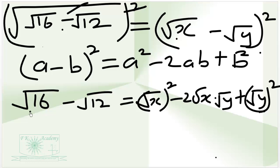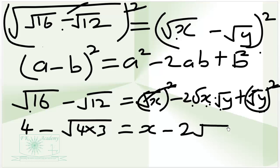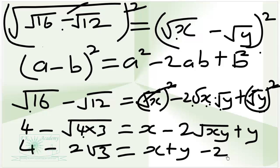Square root of 60 is 4 minus square root of 4 times 3. So we have x minus 2 times the combined radical of x and y, plus y. Square root of 4 is 2, times square root of 3, which is root 3. So we have 4 minus 2 square root of 3 is equal to x plus y minus 2 square root of xy.